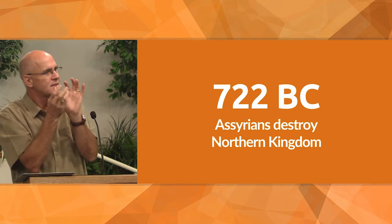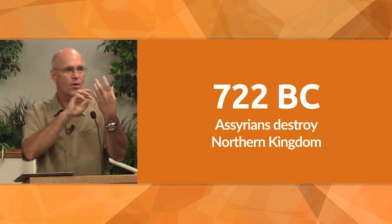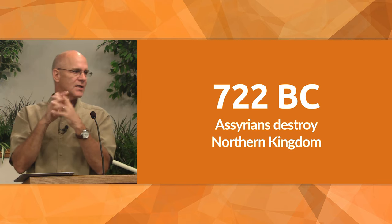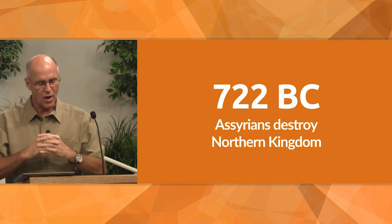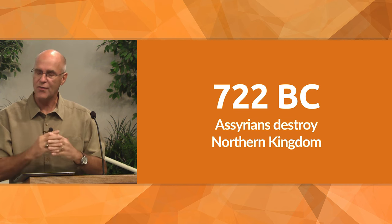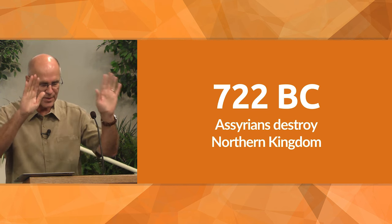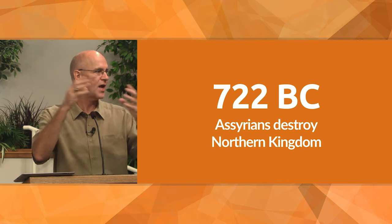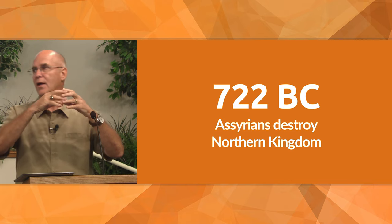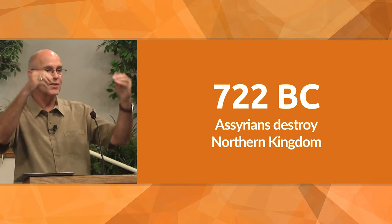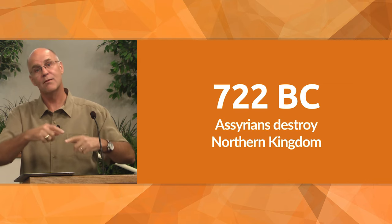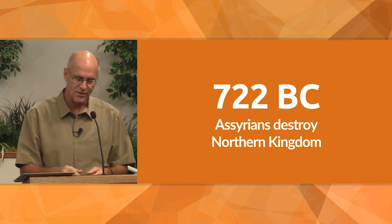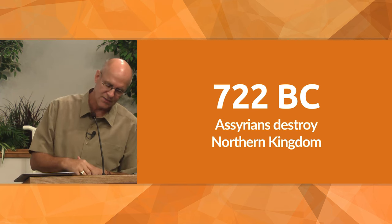So their religion had some parts of Judaism but also parts of pagan worship, and so the southern tribes rejected them because of this. And the northern tribes, after a time, began to collaborate with other nations against Judah. So that was another reason the southern kingdom was not very friendly to the Samaritans.